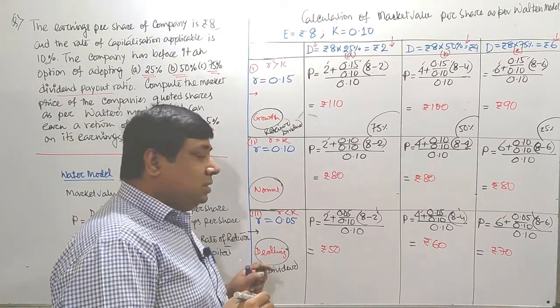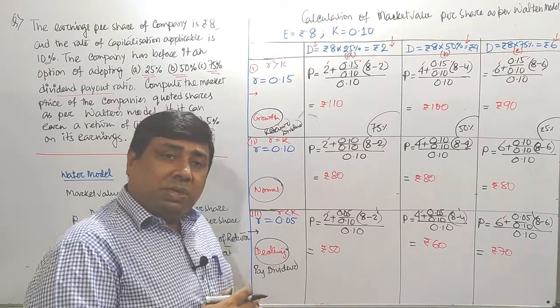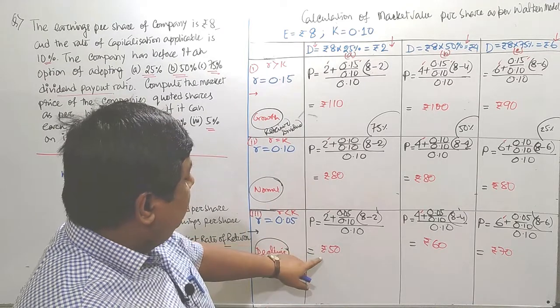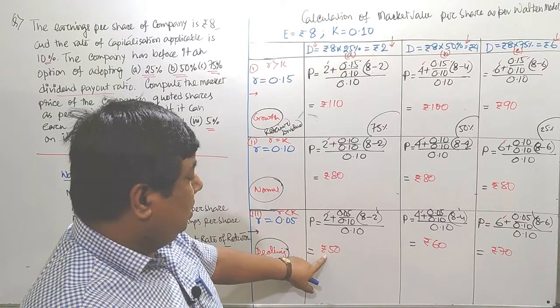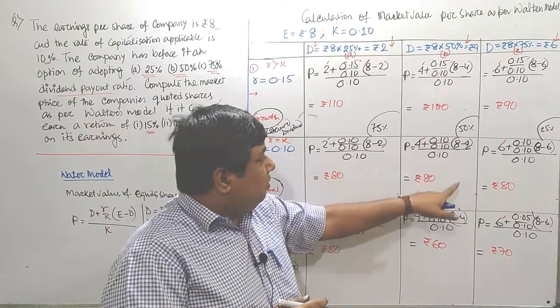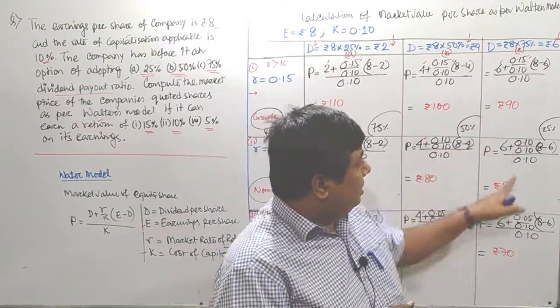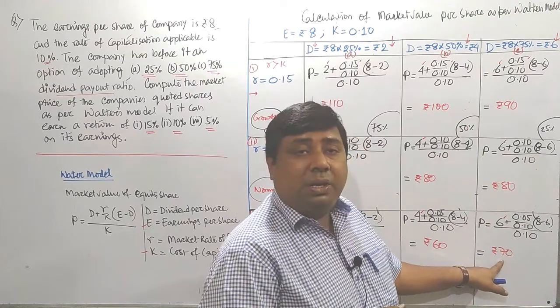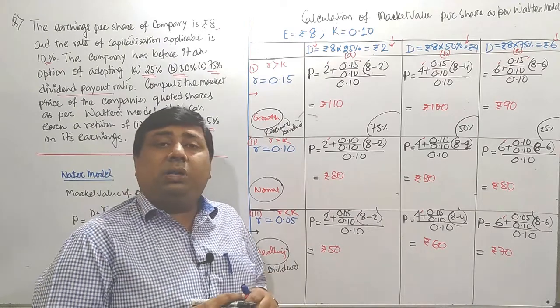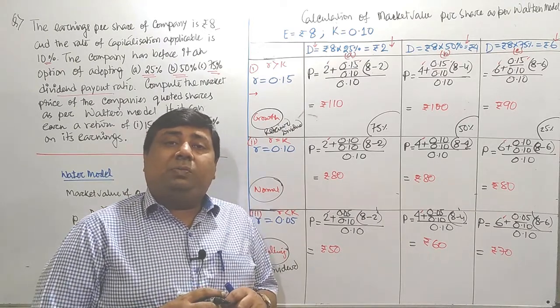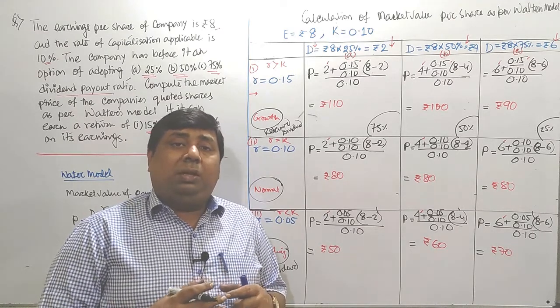In third case, if the firm is considered as a declining firm, Walter suggests the firm should pay more and more dividend. At first case, the company pays lesser dividend, the value got 50. In second case, the company pays 50% dividend, the value got 60. In third case, the company pays more dividend, you got more value. This kind of question can justify or easily portray the logic or the substance of the model easily.